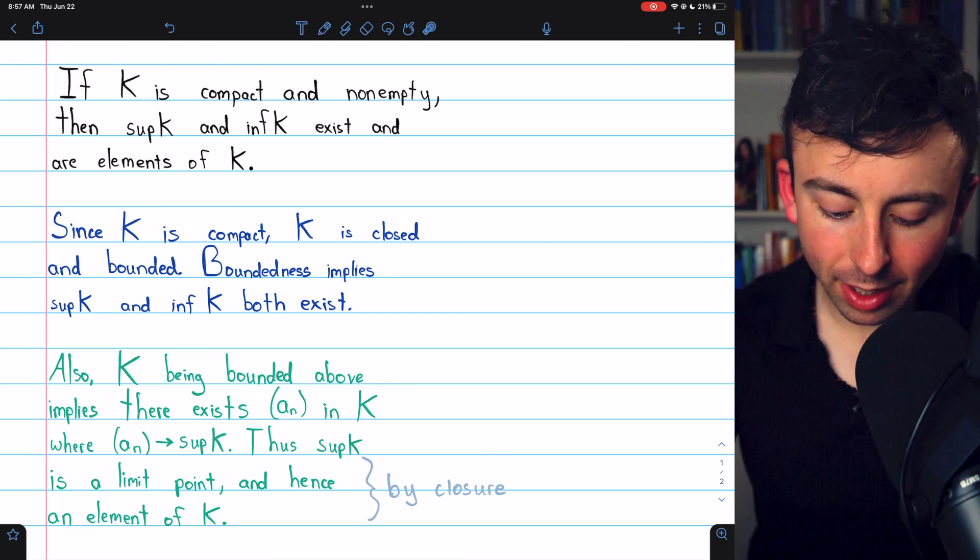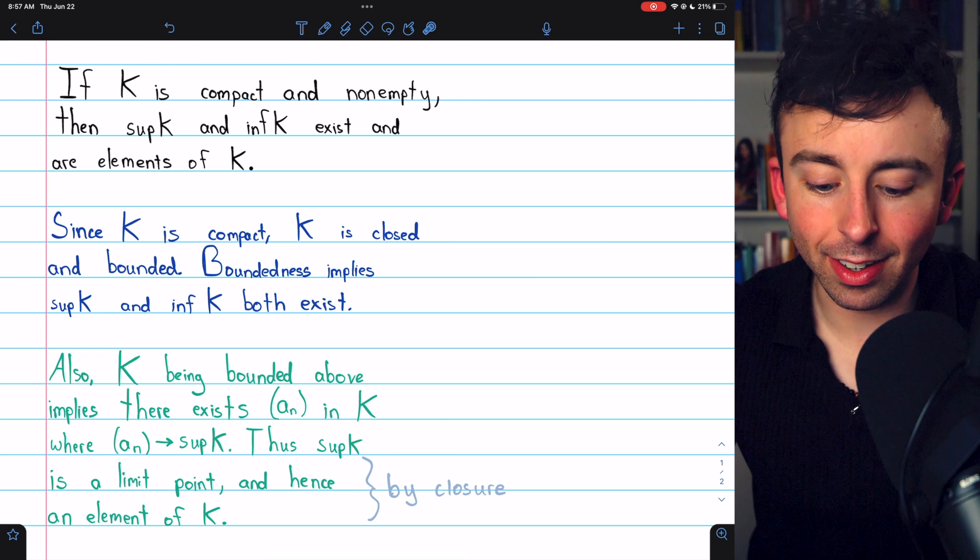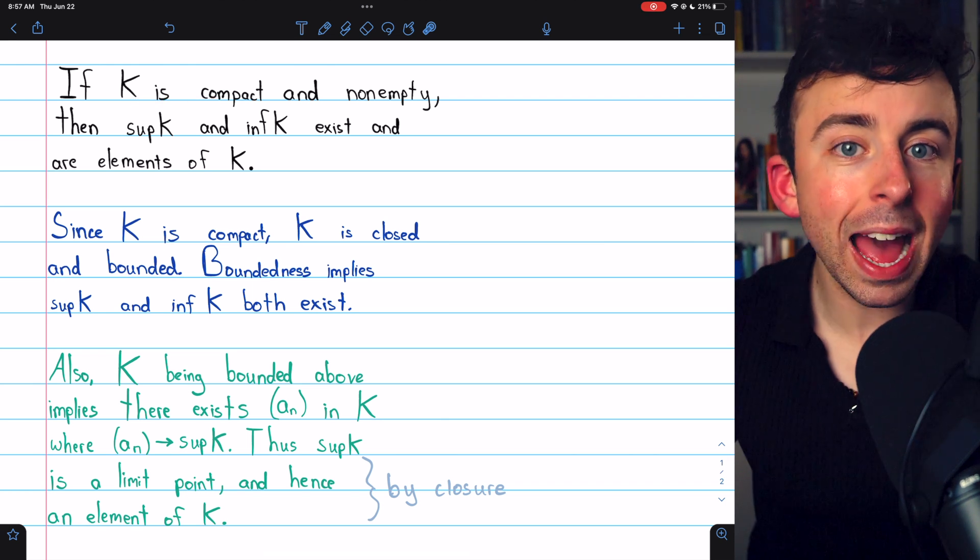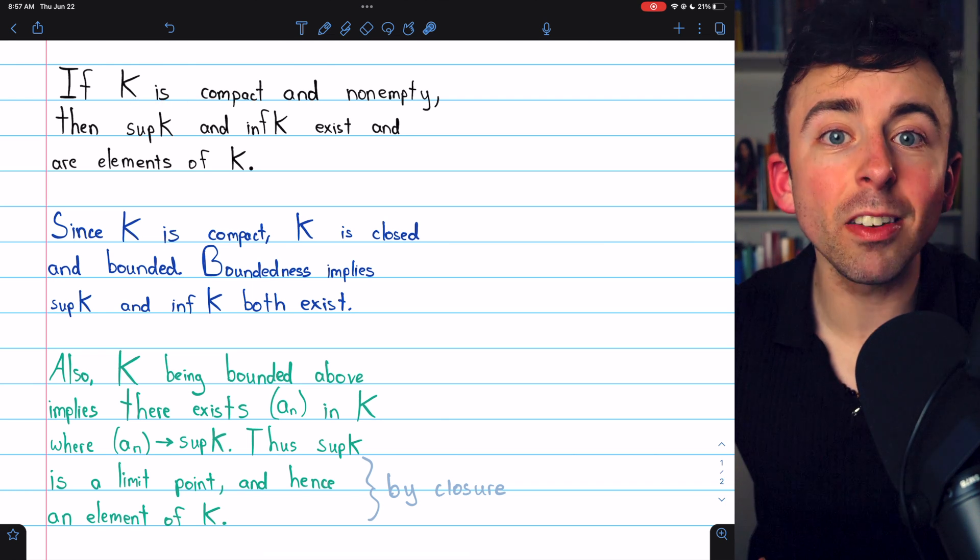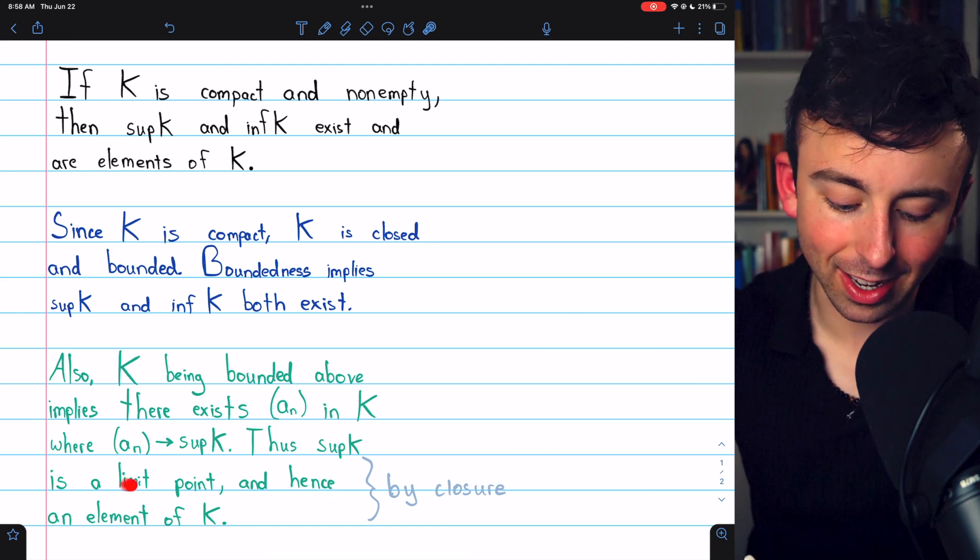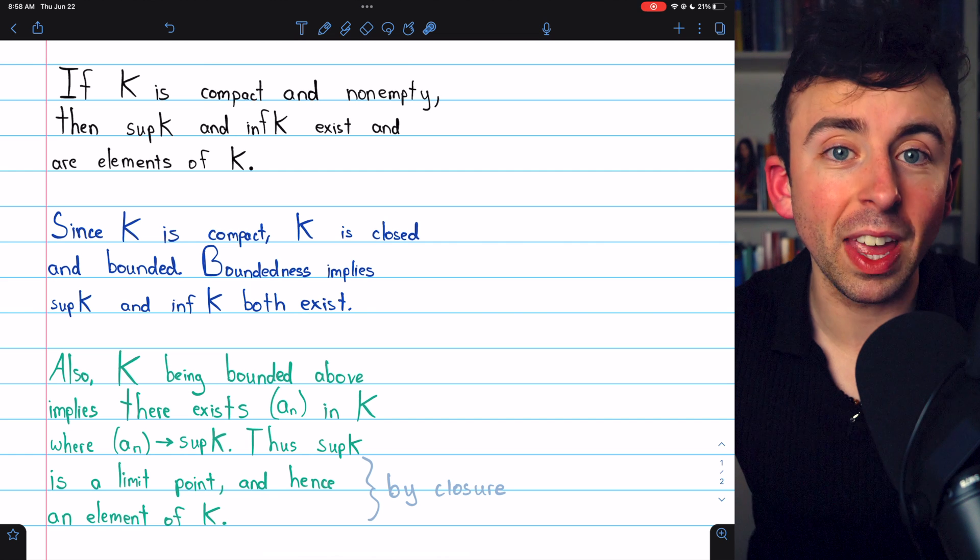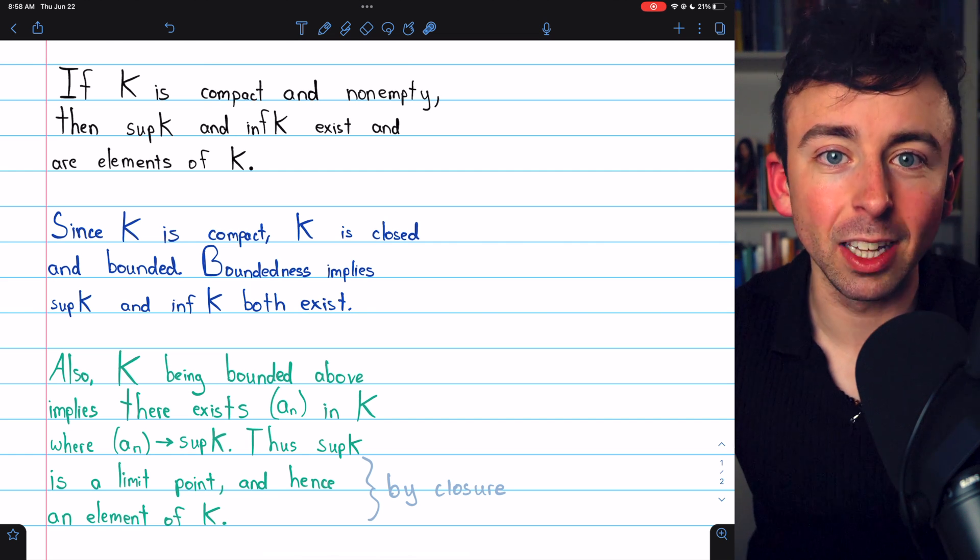Now, that means by definition that the supremum is a limit point of K, but then K was taken to be compact, which means it contains all of its limit points because it's closed, and that means that it must contain this particular limit point, the supremum. So, the supremum of K exists, and it's an element of K.